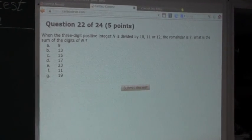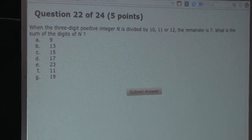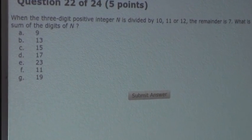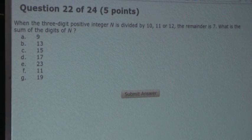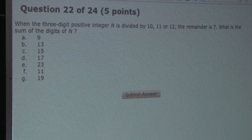Now the question is: when the 3-digit positive integer n is divided by 10, 11, or 12, the remainder is 7. What is the sum of the digits of n?